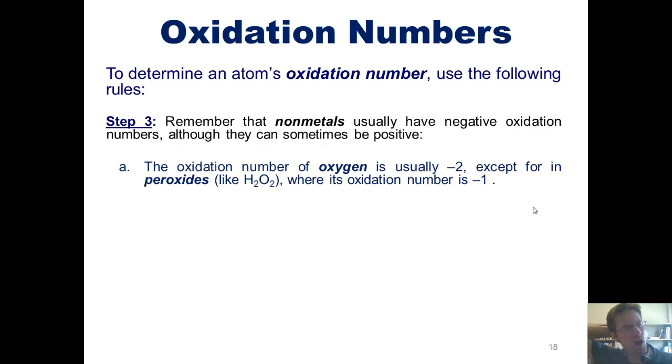The oxidation number of oxygen is almost always -2, except for in peroxides like H2O2, where its oxidation number is -1. The other exception is if oxygen is bonded to other oxygen atoms, as in O2, for example, in which its oxidation state is, of course, zero, as we delineated in the previous slide.